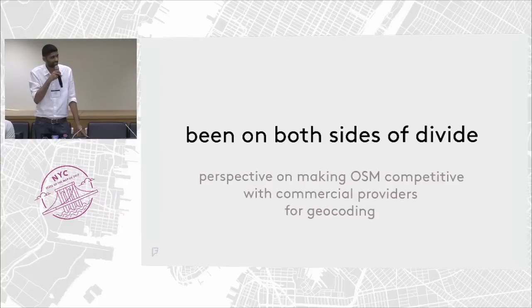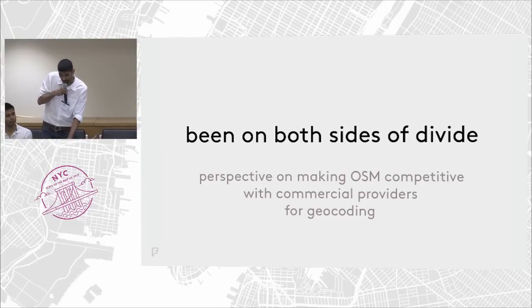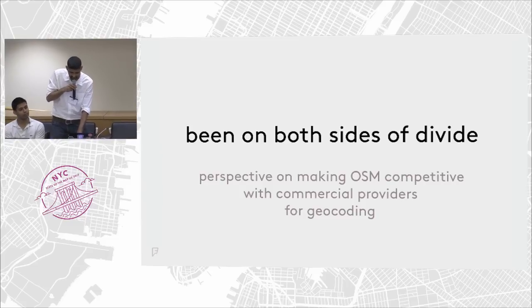I've worked on Foursquare's open source Two Fishes geocoder for the last year and a half, and before that I worked three years on the Bing Maps address geocoders at Microsoft. Having been on both sides of the open/closed data divide, hopefully I have some perspective to offer on what it would take for OpenStreetMap to be more competitive with commercial data providers, specifically for geocoding with all of its unique challenges.